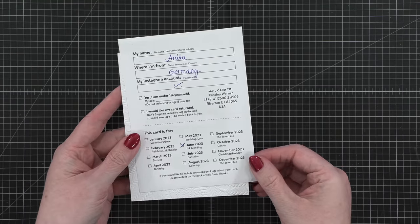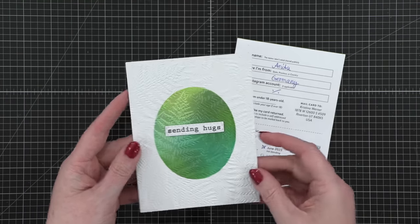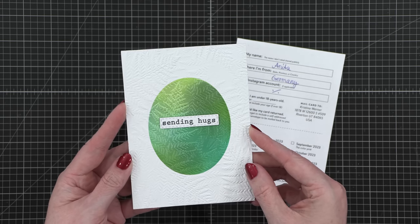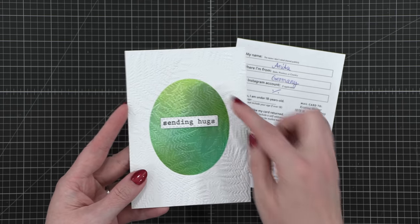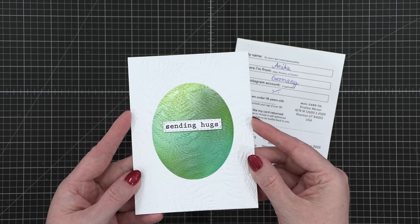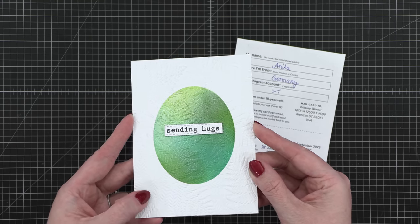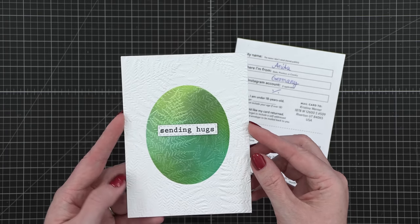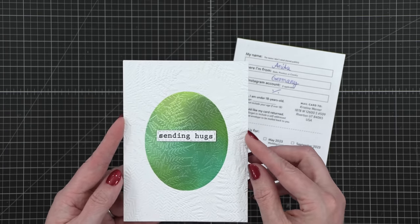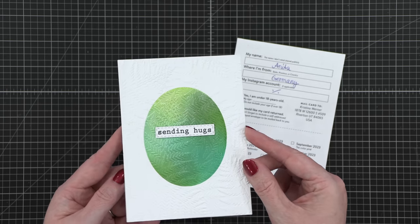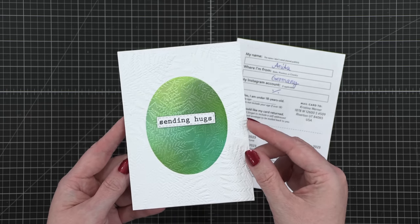This first card is from Anita in Germany, and this is for June. So this is an ink blending card. I thought this was just such a fun, creative way to use an embossing folder. She's masked off an oval and ink blended inside. I can't decide if she used like metallic inks or what, but there is a sheen. And then run it through an embossing folder. Or she may have done it the other way around, I'm not sure which, but I thought it was just a really fun and easy, simple way to use an embossing folder and do some ink blending.